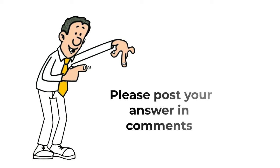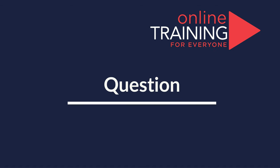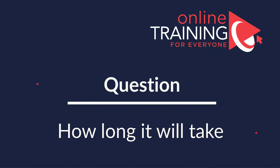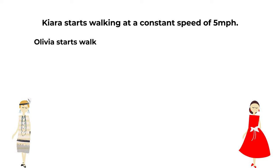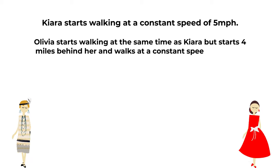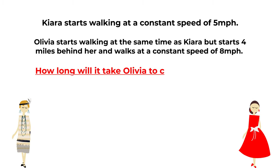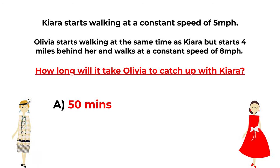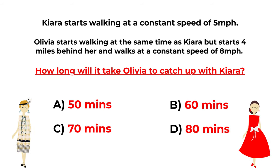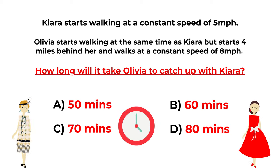Here's an interesting question we frequently see on the test. Kiara walks at a constant speed of 5 miles per hour. Olivia starts walking at the same time as Kiara but starts 4 miles behind her, walking at a constant speed of 8 miles per hour. How long will it take for Olivia to catch up with Kiara? Choices: choice A, 50 minutes; choice B, 60 minutes; choice C, 70 minutes; choice D, 80 minutes.